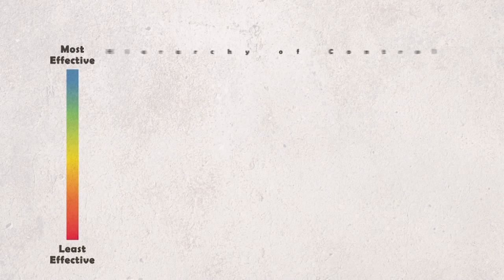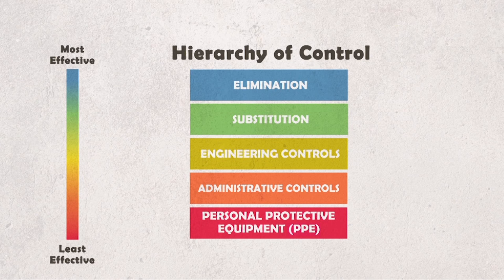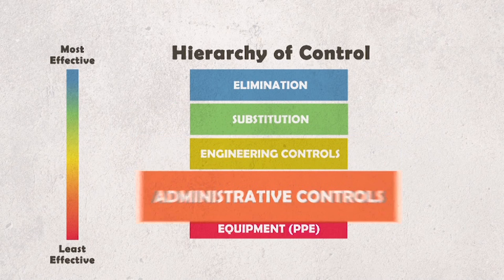In the hierarchy of controls, the control methods include elimination, substitution, engineering controls, administrative controls, and personal protective equipment or PPE.